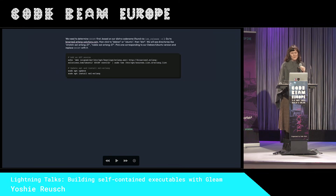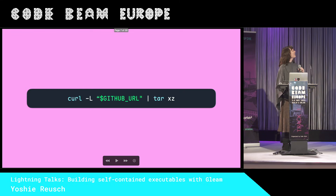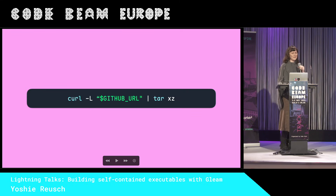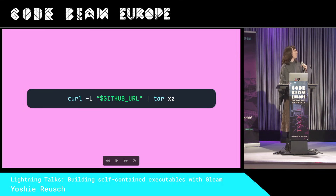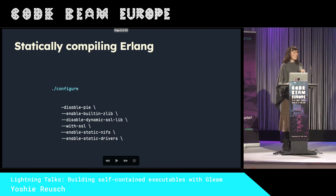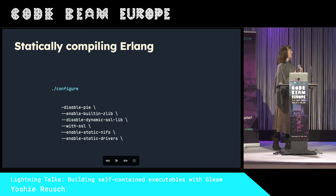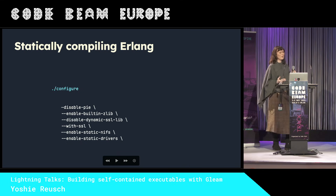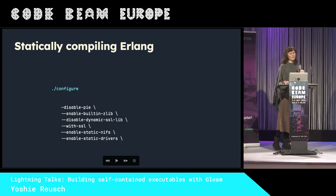Compared to Gleam, it's just: fetch this URL, unpack it, and you're done. That's a lot of different moving parts you have to handle. So could we also make this really simple for Erlang? The reason why this works for Gleam is that it's just a static binary — so could we have a static binary of Erlang?